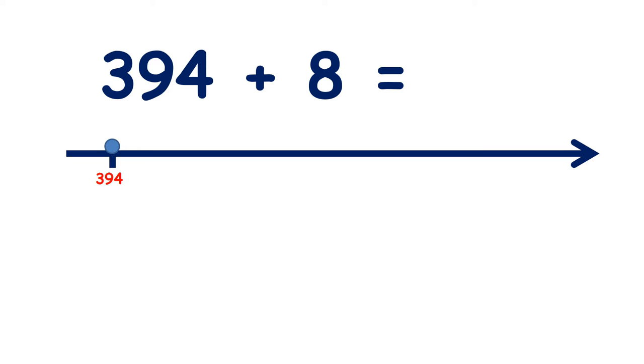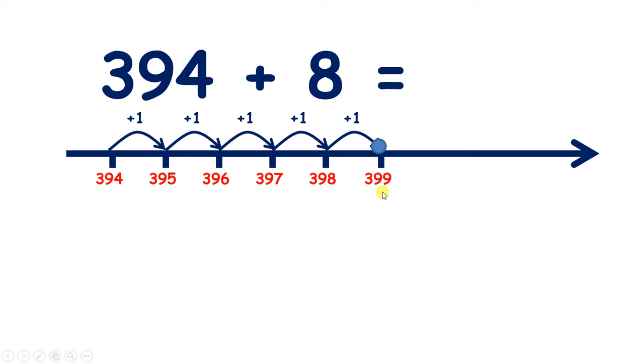Now we have 394 add 8. So if we count on 8 from 394, we get 395, 396, 397, 398, 399, 400. So whenever you add 1 to a number with 99, you go to the next 100. So 400, 401, 402. So 394 add 8 equals 402.